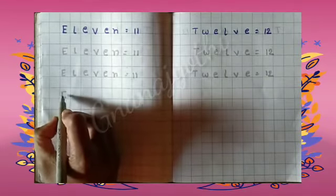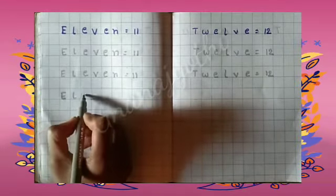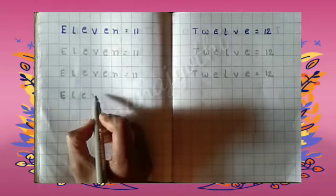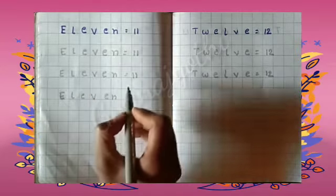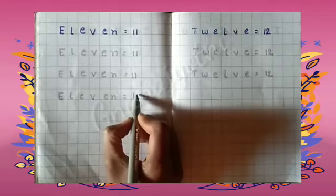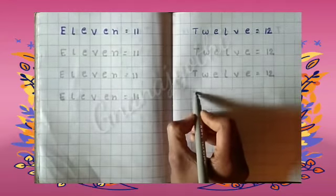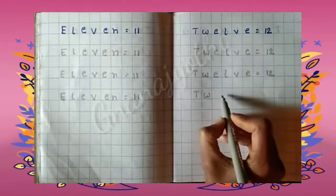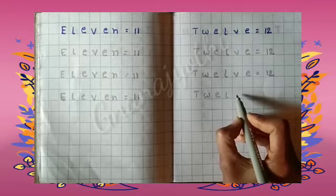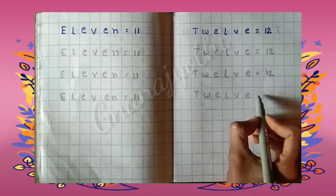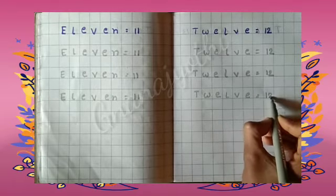See children, while writing if you say and write, you can learn the spellings of these numbers easily. E L E V E N, 11. T W E L V E is equals to 12.